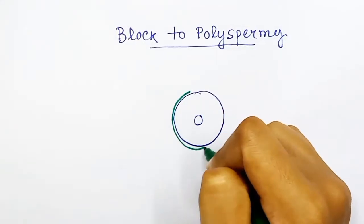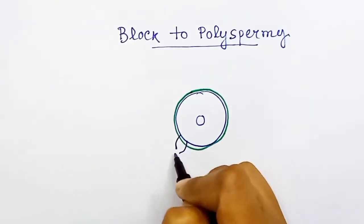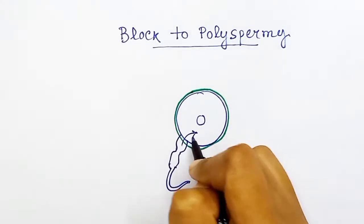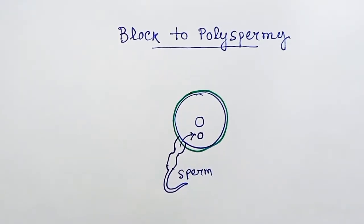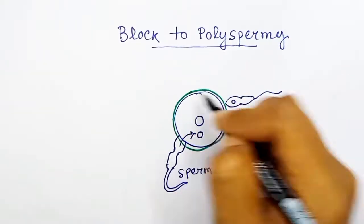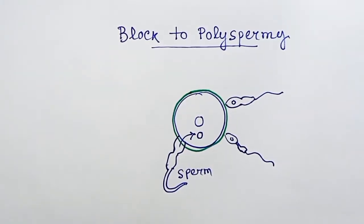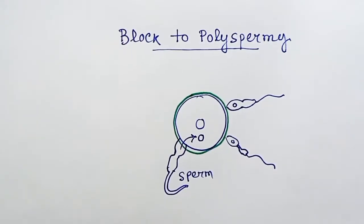Polyspermy is penetration of multiple sperms into one ovum. Polyspermy is not beneficial to the formation of the embryo. Polyspermy can cause the death of the embryo.